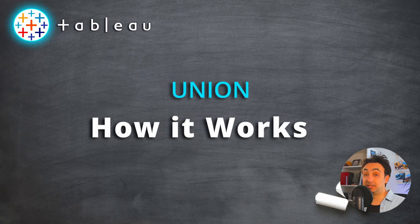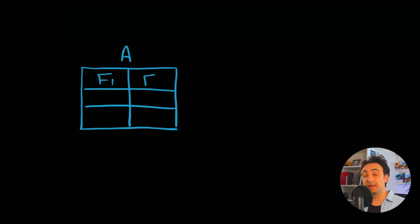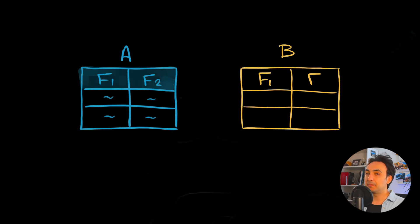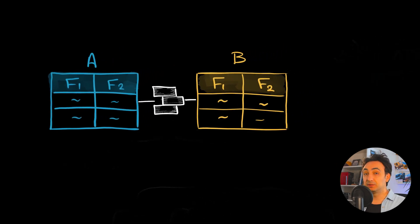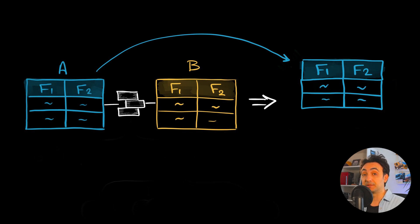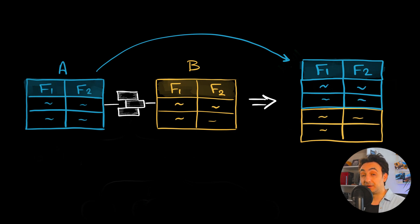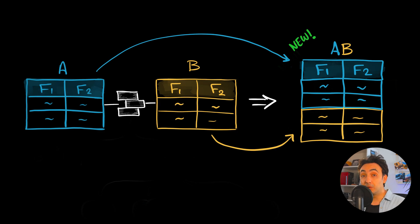Let's talk about union. If we have two tables with exactly the same columns, it sometimes makes sense to combine them into one big table. We can do that using union. Once we do union, the columns and rows of the left table will be presented at the output, and from the right table only the rows will be appended beneath the first one.